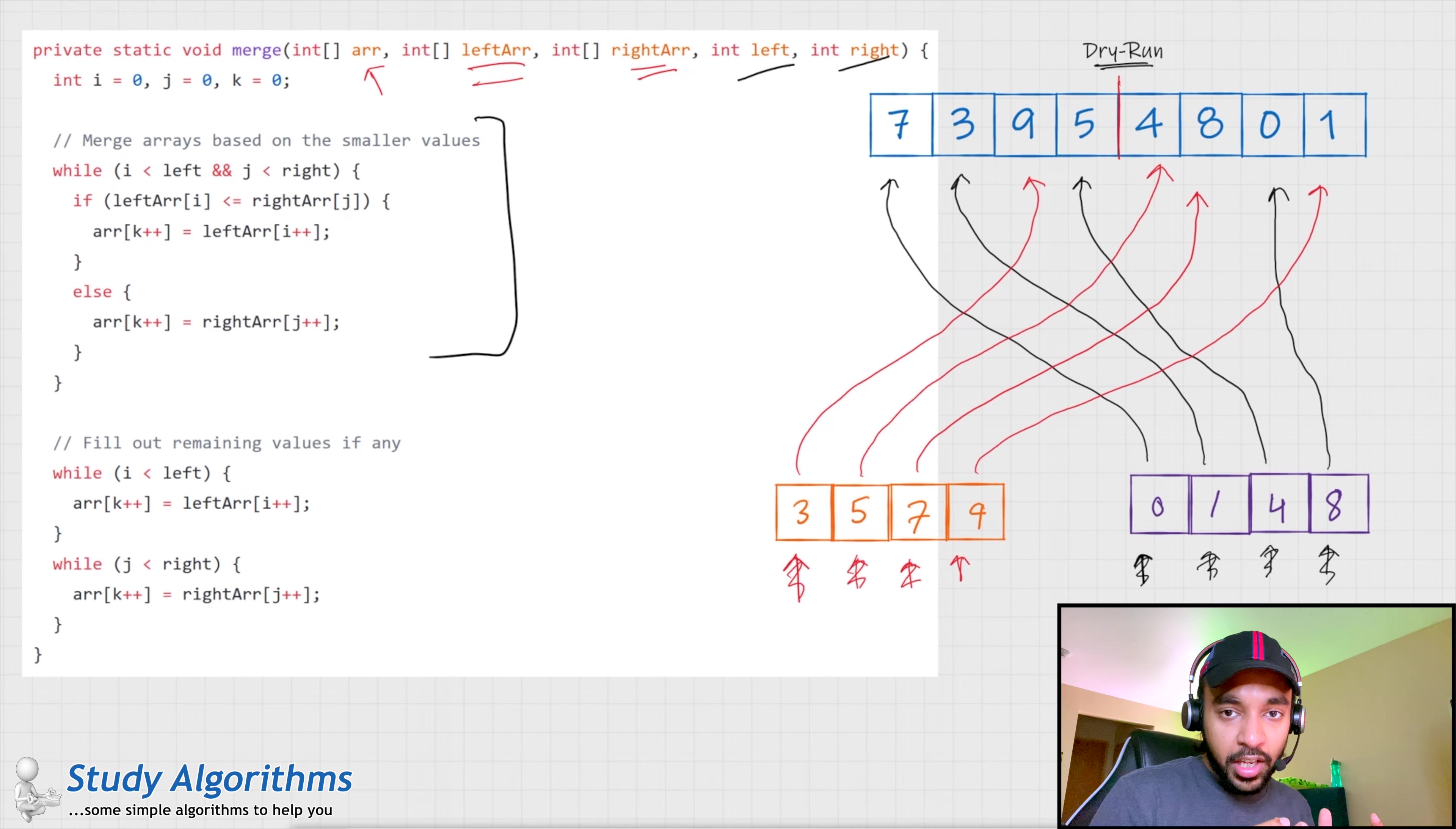So, you see all of these elements will go into their respective positions and then we would get the ultimate sorted array. And, this is your answer.